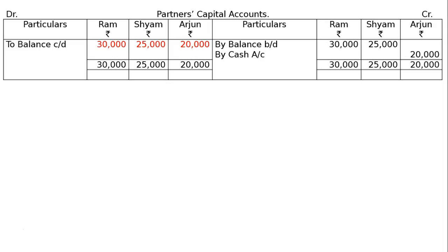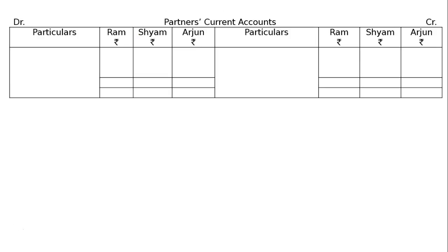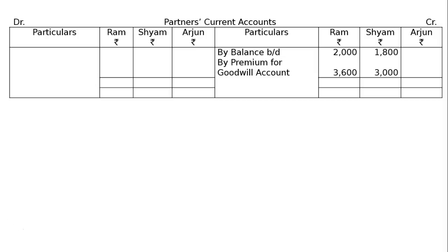Since capital accounts and current accounts are separate, we draw the partners current accounts for Ram, Siam, and Arjun with proper format. On the credit side: by balance brought down Rs. 2,800, and by premium for goodwill account — for Ram Rs. 3,600 and for Siam Rs. 3,000, because Arjun is bringing in Rs. 6,600 as goodwill.